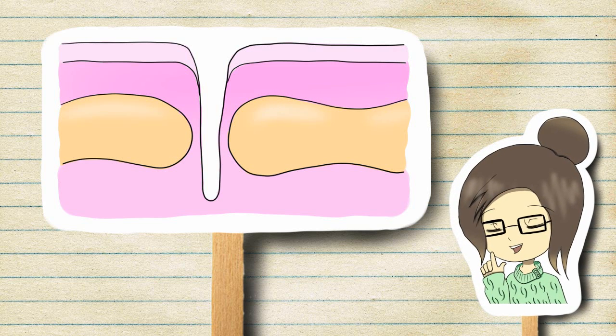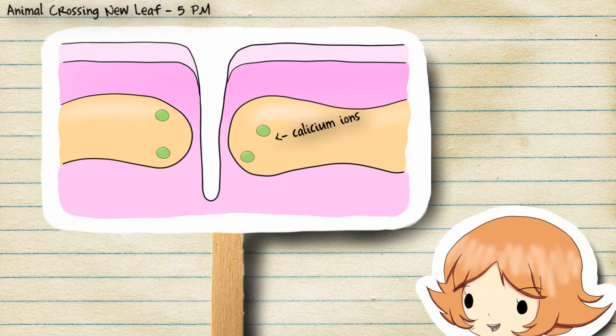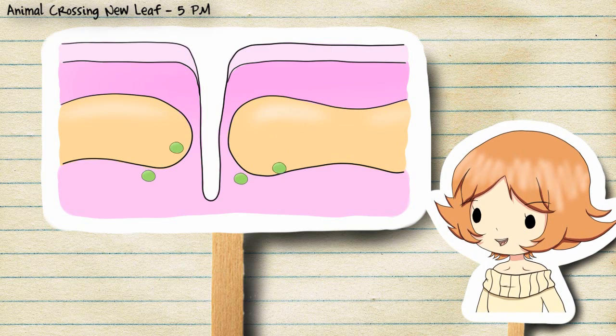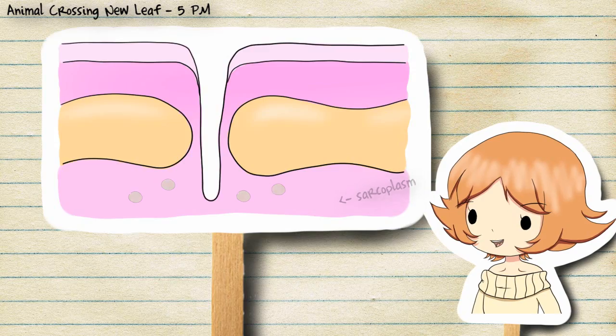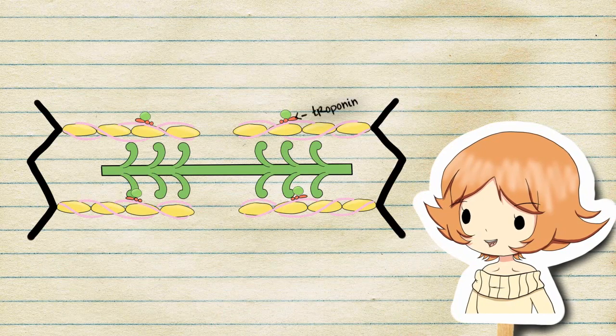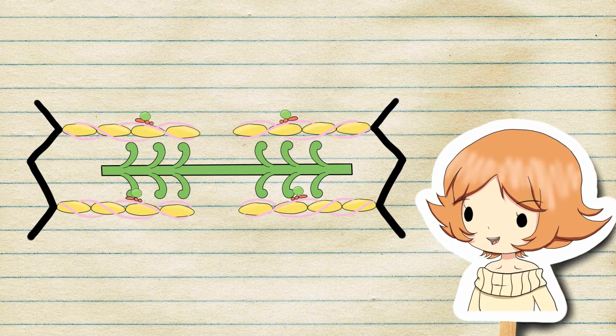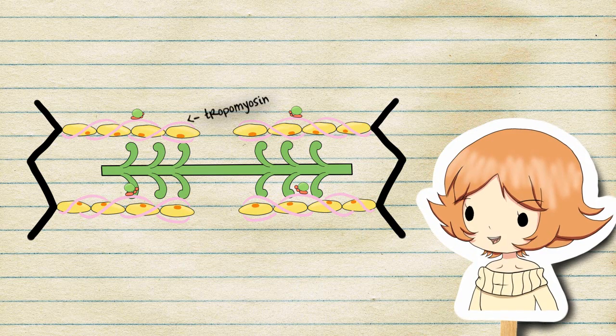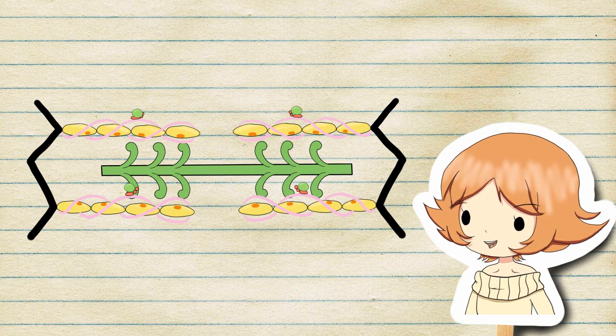Depolarization of the T-tubules release calcium ions. From there, calcium ions diffuse from the SR into the sarcoplasm and bind to troponin, causing it to change shape and become erect, pulling on tropomyosin and exposing the binding sites on actin myofilaments.